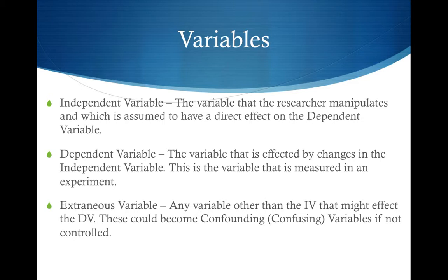Dependent variable. This is the variable that is affected by the changes in the independent variable, or changes in the conditions. This is the variable that is measured in an experiment — the one you need to know in order to compare the different conditions.